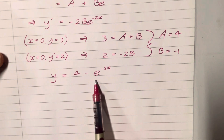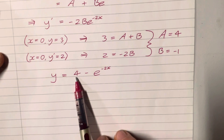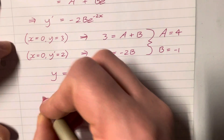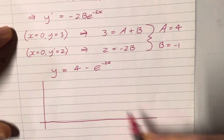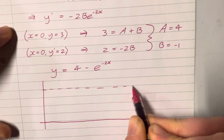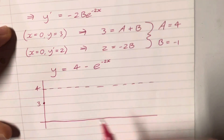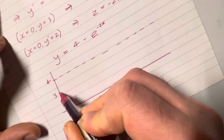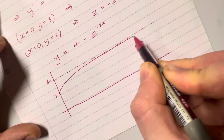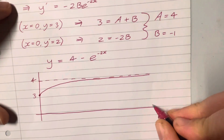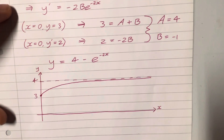The final part was to sketch the curve for non-negative x. When x is 0 it passes through 3 with a positive gradient. As x tends to infinity, the exponential term tends to zero and the whole thing tends to 4, giving a horizontal asymptote at y equals 4. The sketch should show a curve starting at (0, 3) with positive but decreasing gradient, approaching the asymptote. Label the axes x and y.